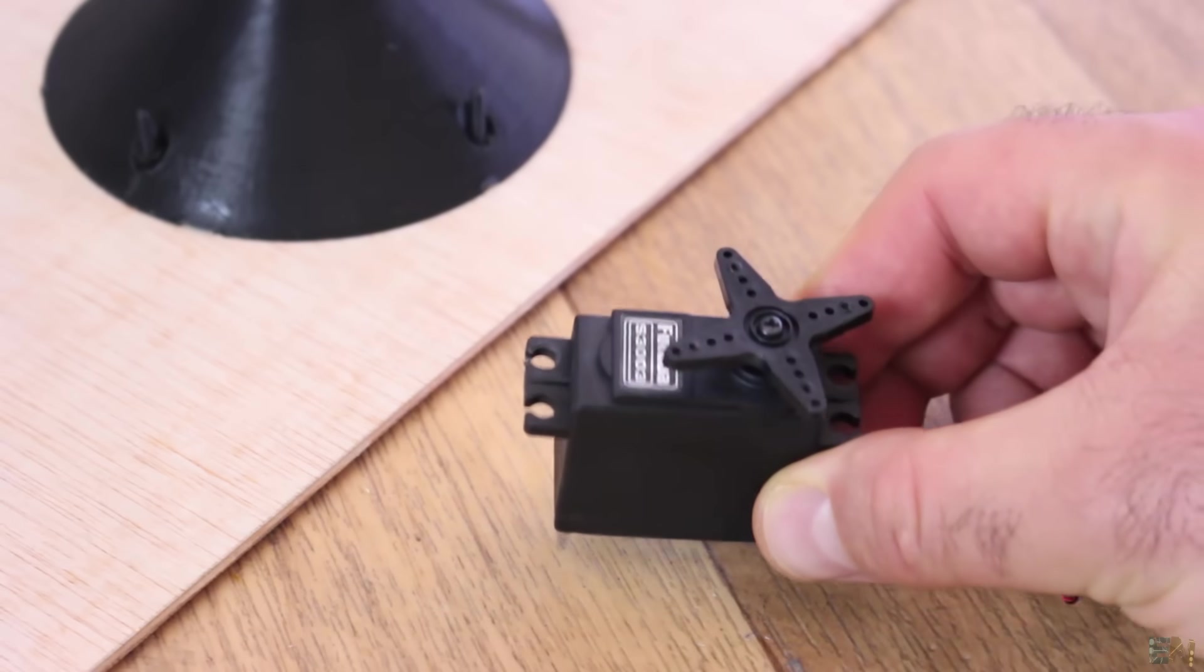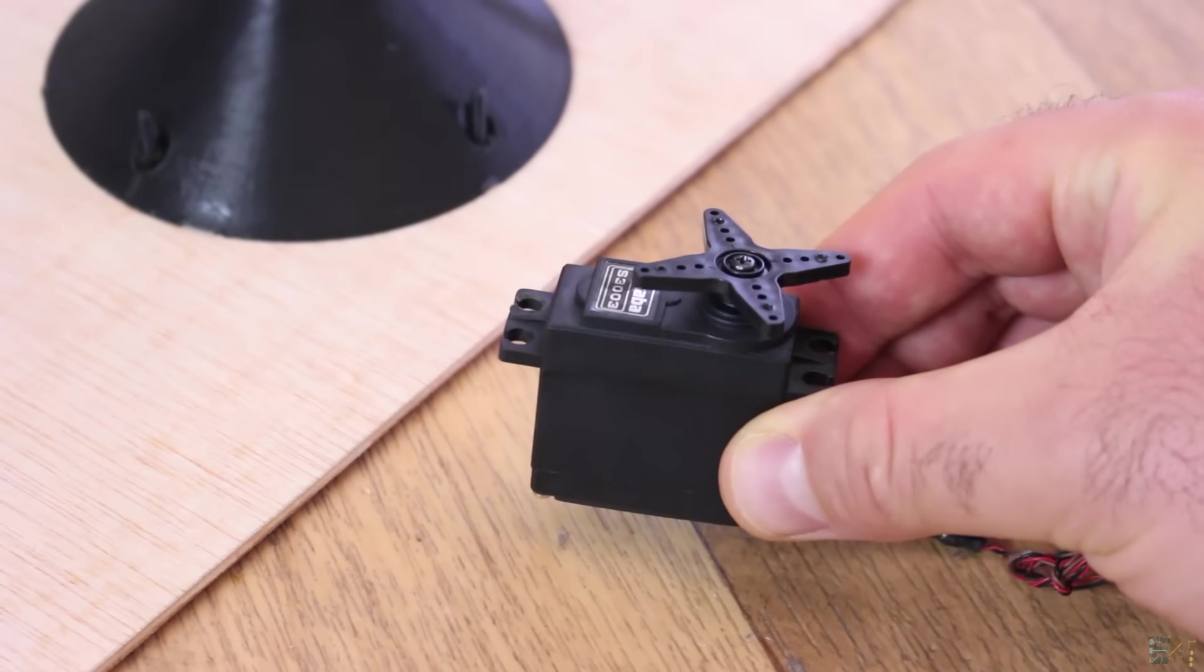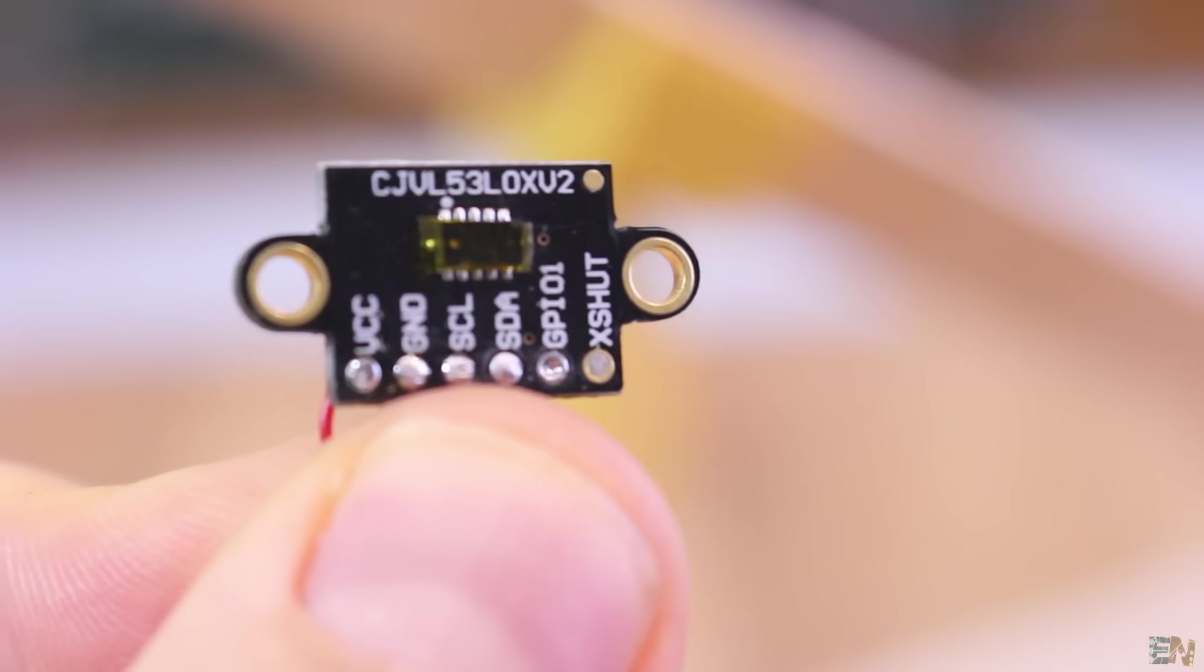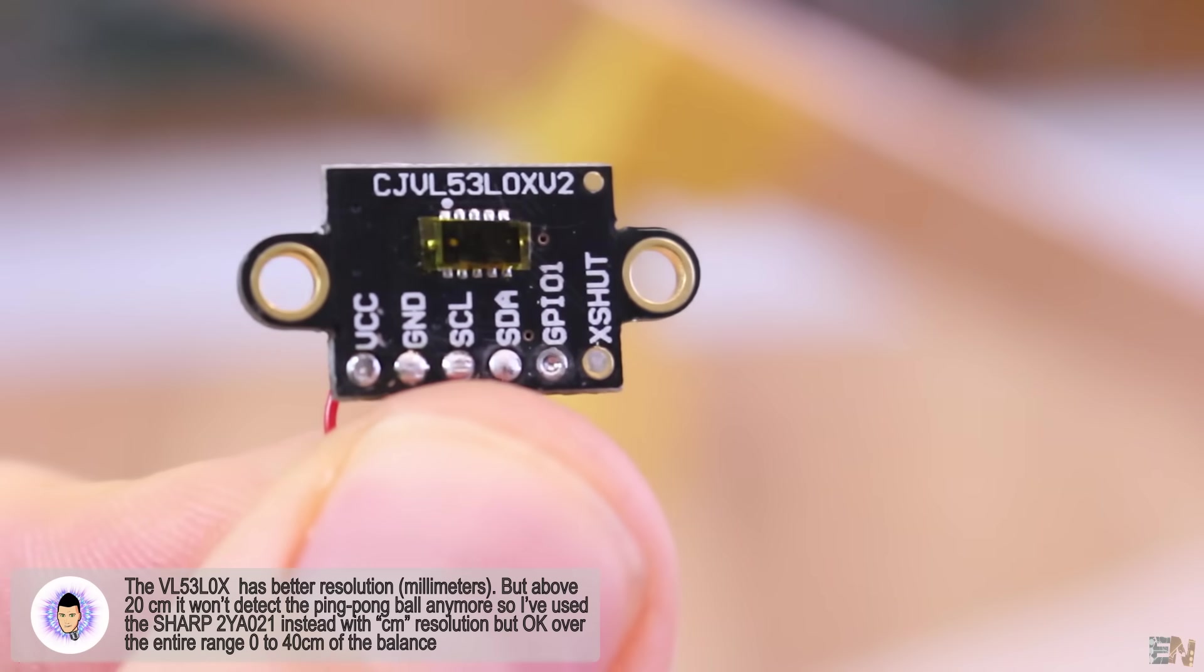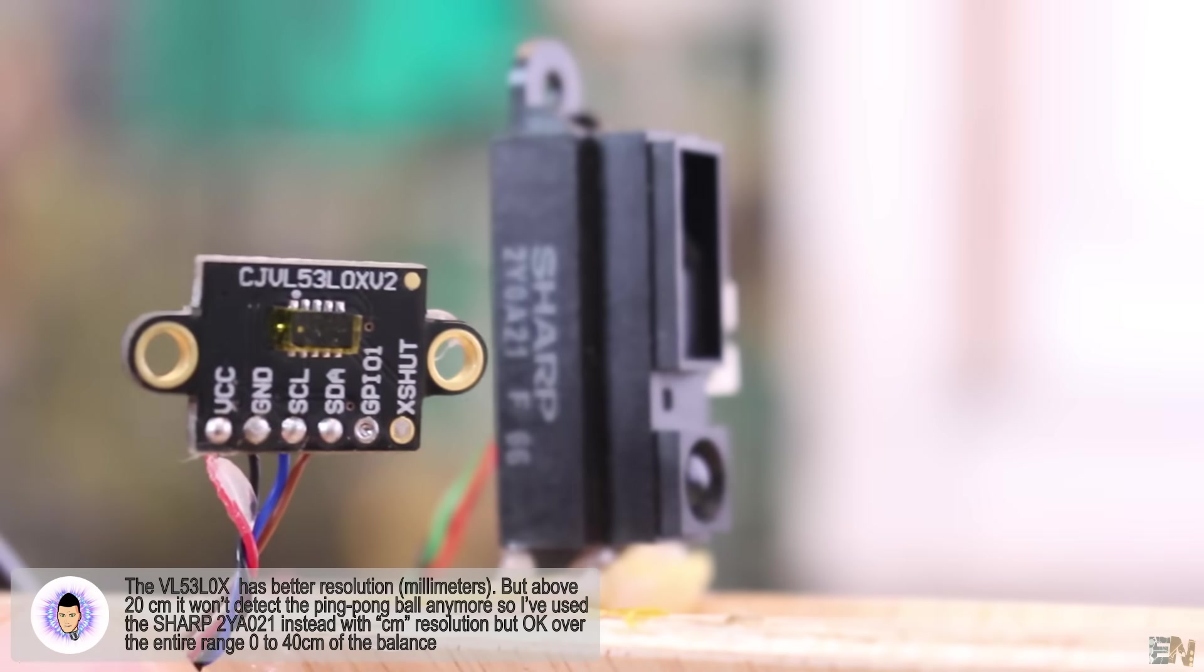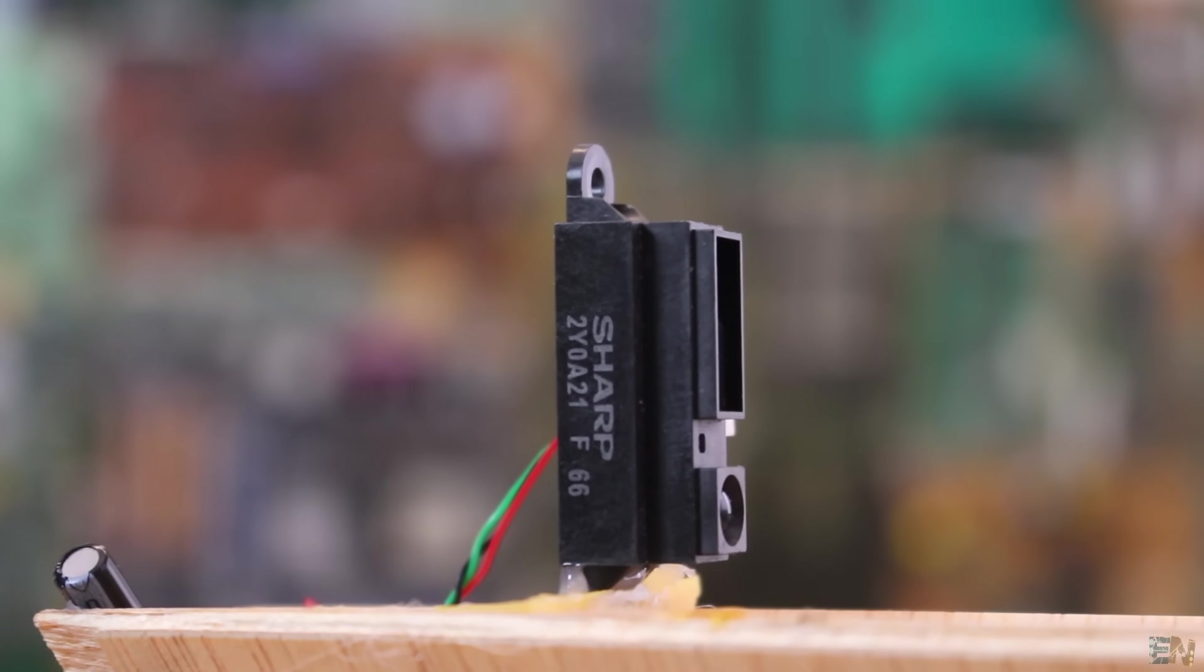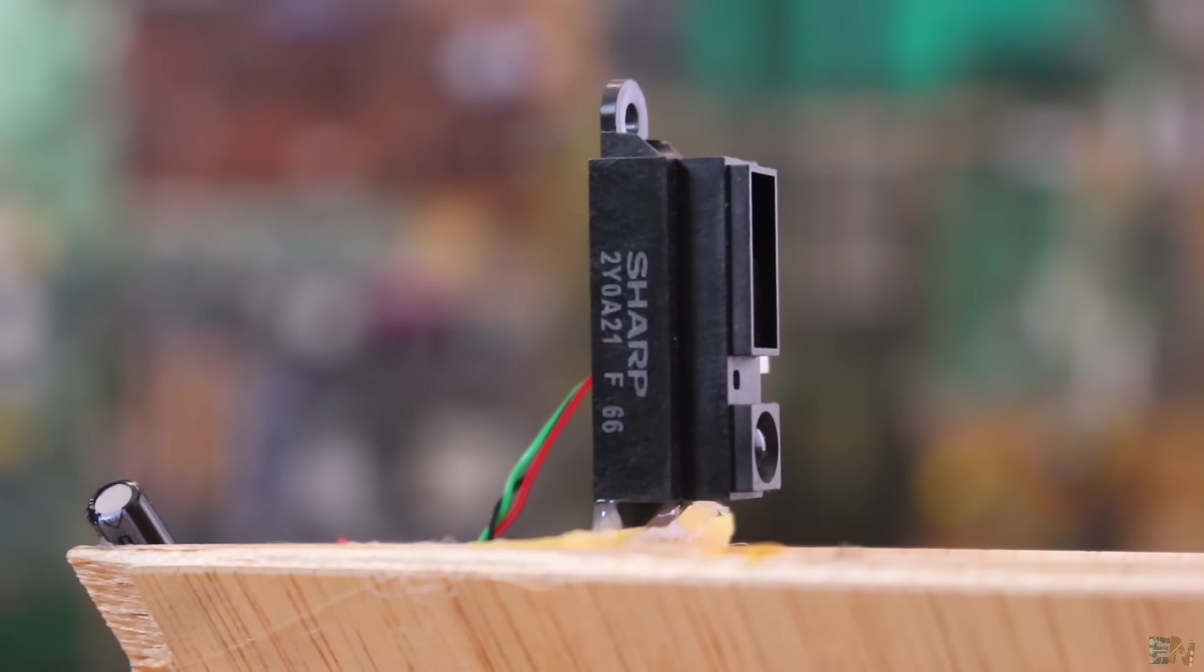To control the movement I use the S3003 Futaba servo motor. To measure the distance I first wanted to use the VL53L0X laser distance sensor, but that wasn't precise enough for distances above 20 cm. That's why I've used another infrared sensor, the Sharp 2Y0A21.